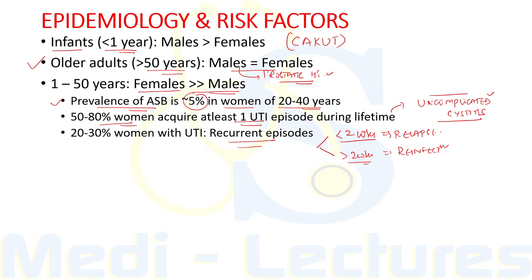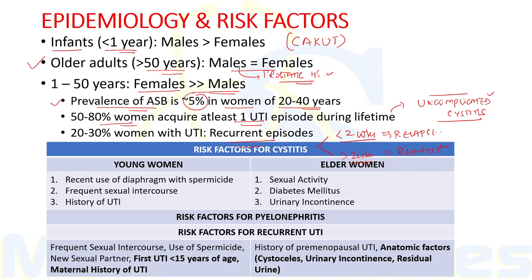Now let's discuss the various risk factors. For uncomplicated cystitis in young women, recent use of a diaphragm with spermicidal agent, frequent sexual intercourse, and history of UTI are independent risk factors. In older postmenopausal women, the risk factors for cystitis include frequent sexual activity, diabetes mellitus, and urinary incontinence.